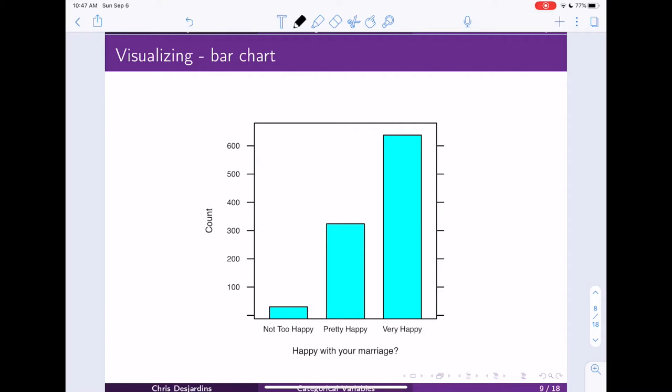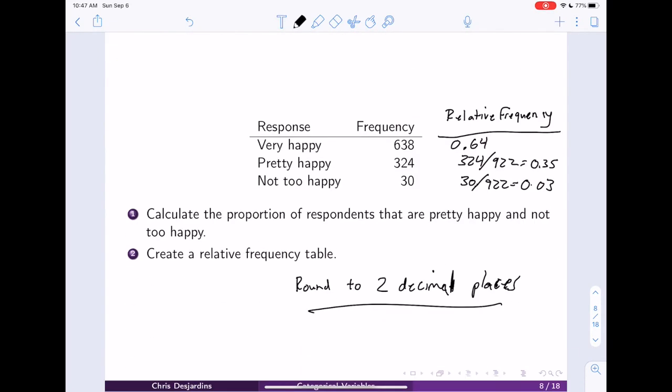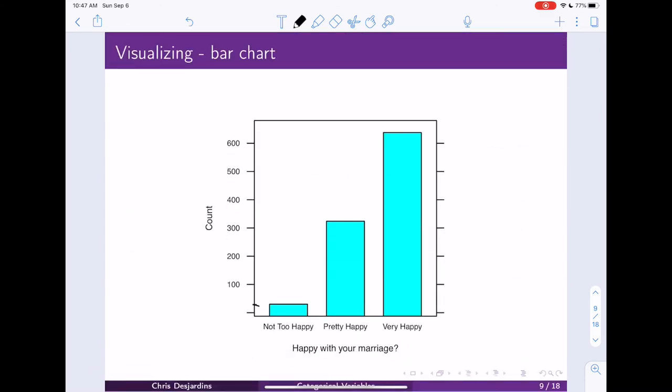We see here that not too happy is maybe, I forgot what the actual number was. Went up one too many, 30. So we see it's about 30 right there. This is like 324. And then this value here was like 600, maybe 650 or something. I don't remember the exact number.